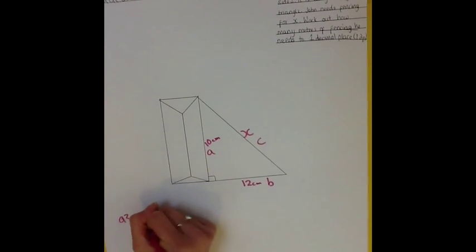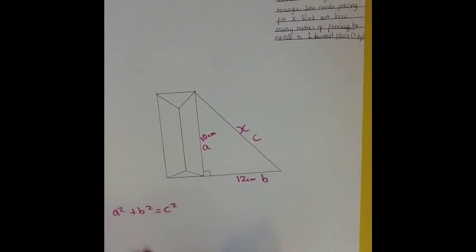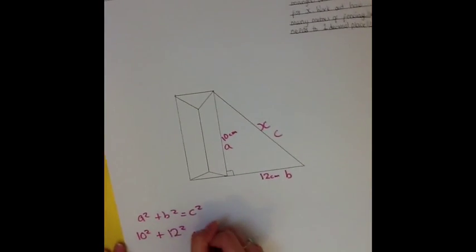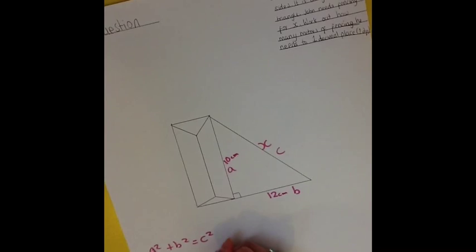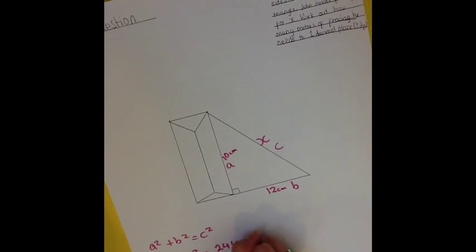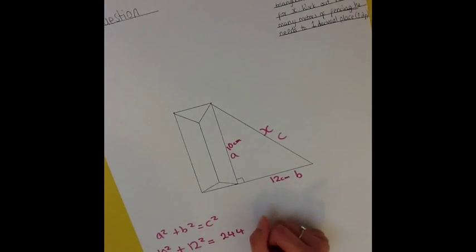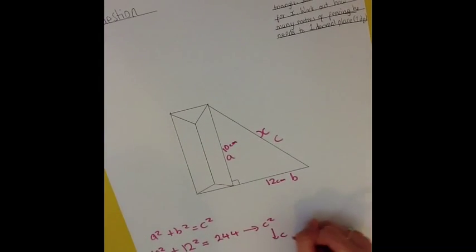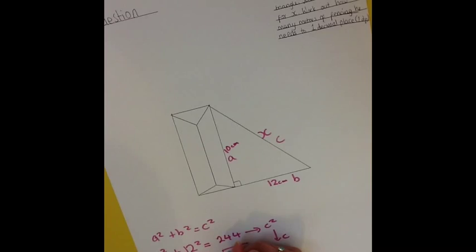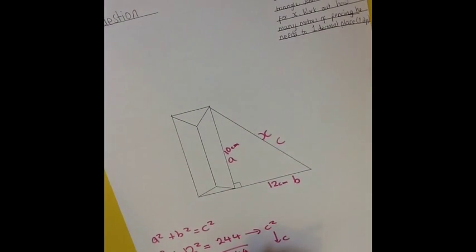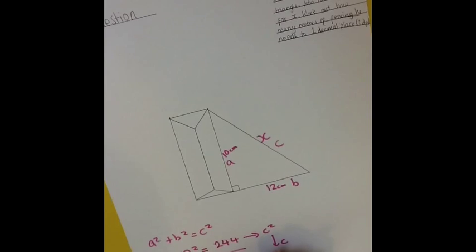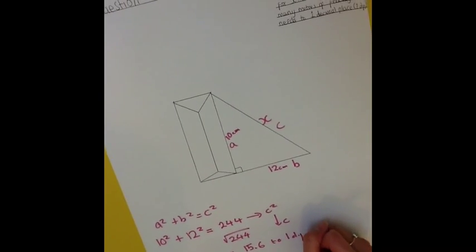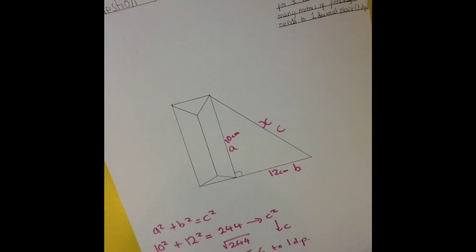So, a squared plus b squared equals c squared. So, you do 10 squared and 12 squared equals 244. And, remember, this is c squared. So, again, to get to c, you must square root 244, which gives you 15.6 to 1 decimal place. Did you get this answer?